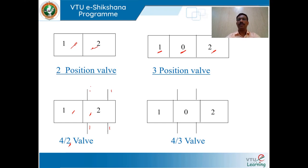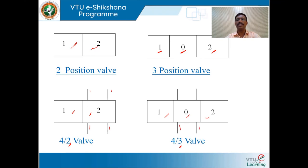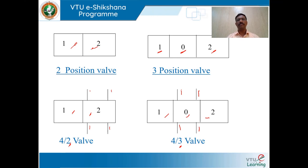To draw a symbol for a 4-way 3-position directional control valve, draw 3 squares denoting 3 switching positions, and at the center path configuration show 4 initial connections, indicating the number of ways. This is how you draw a symbol for 4-way 2-position or 4-way 3-position type of valve.